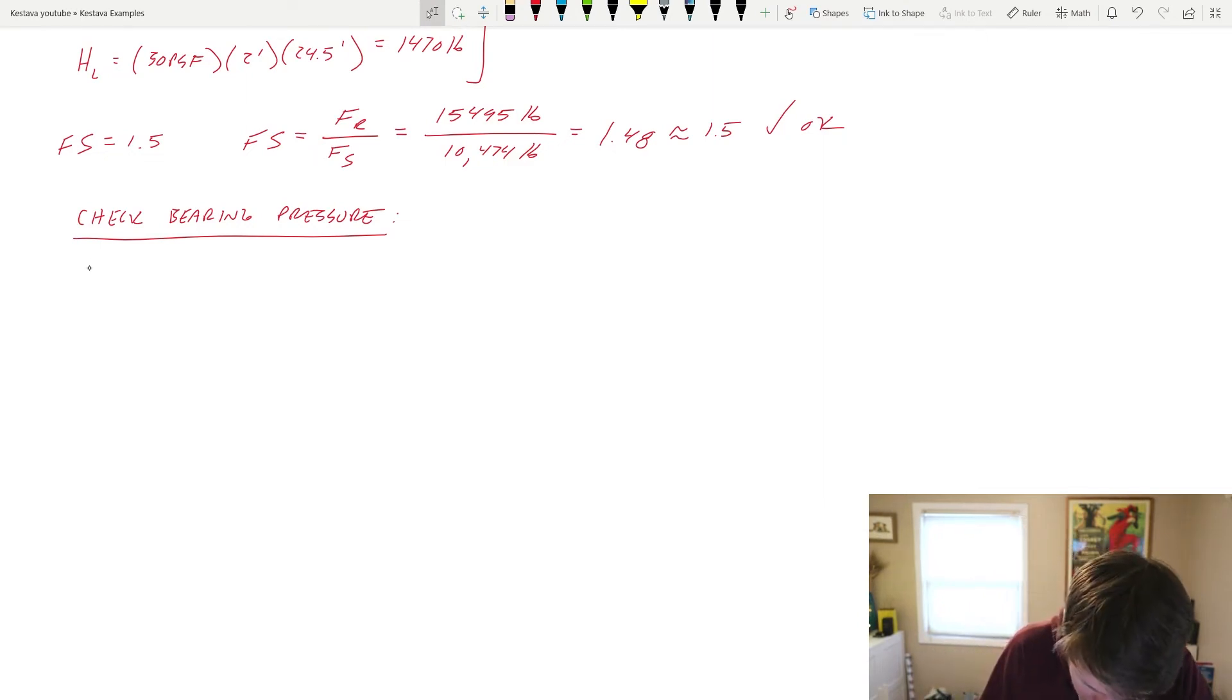Well, we know there's a few things that we already solved for: summation W being one of them, 27,348 pounds, X bar 7.37 feet, and then M overturning 63,515 pound-feet. Those are going to be crucial for us here today.